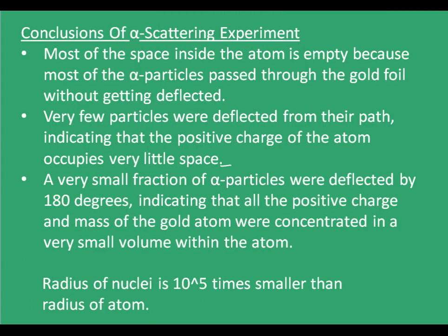Moving forward, let's now see the conclusions of the alpha scattering experiment. First, most of the space inside the atom is empty, because most of the alpha particles passed through the gold foil without getting deflected. Second, very few particles were deflected from their path, indicating that the positive charge of the atom occupies very little space. Third, a very small fraction of alpha particles were deflected by 180 degrees, indicating that all the positive charge and mass of the gold atom were concentrated in a very small volume within the atom.